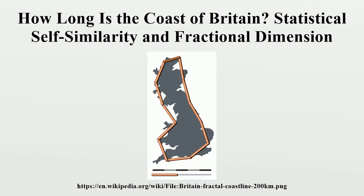The paper examines the coastline paradox: the property that the measured length of a stretch of coastline depends on the scale of measurement. Empirical evidence suggests that the smaller the increment of measurement, the longer the measured length becomes. If one were to measure a stretch of coastline with a yardstick, one would get a shorter result than if the same stretch were measured with a one-foot ruler, because one would be laying the ruler along a more curvilinear route than that followed by the yardstick.